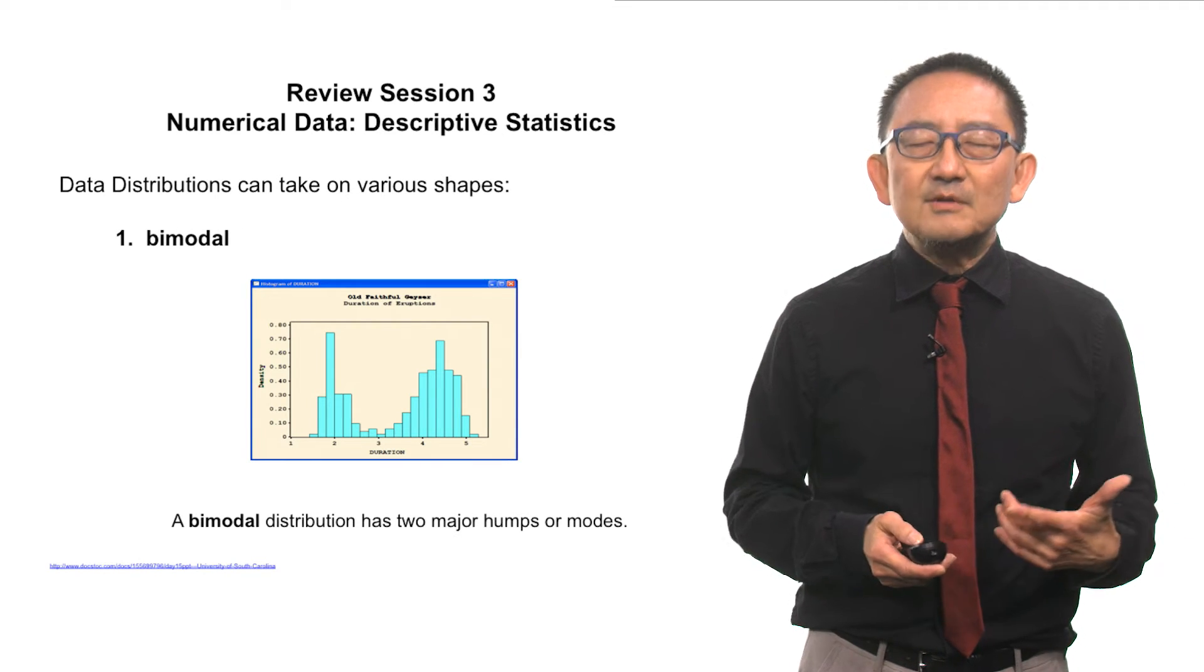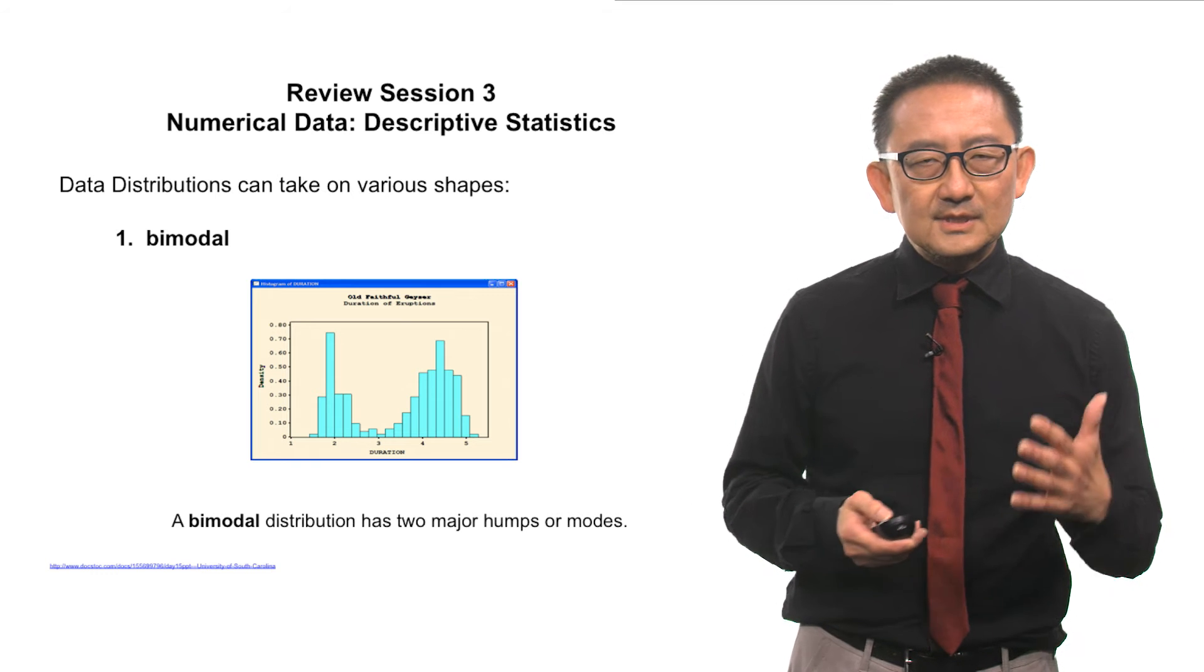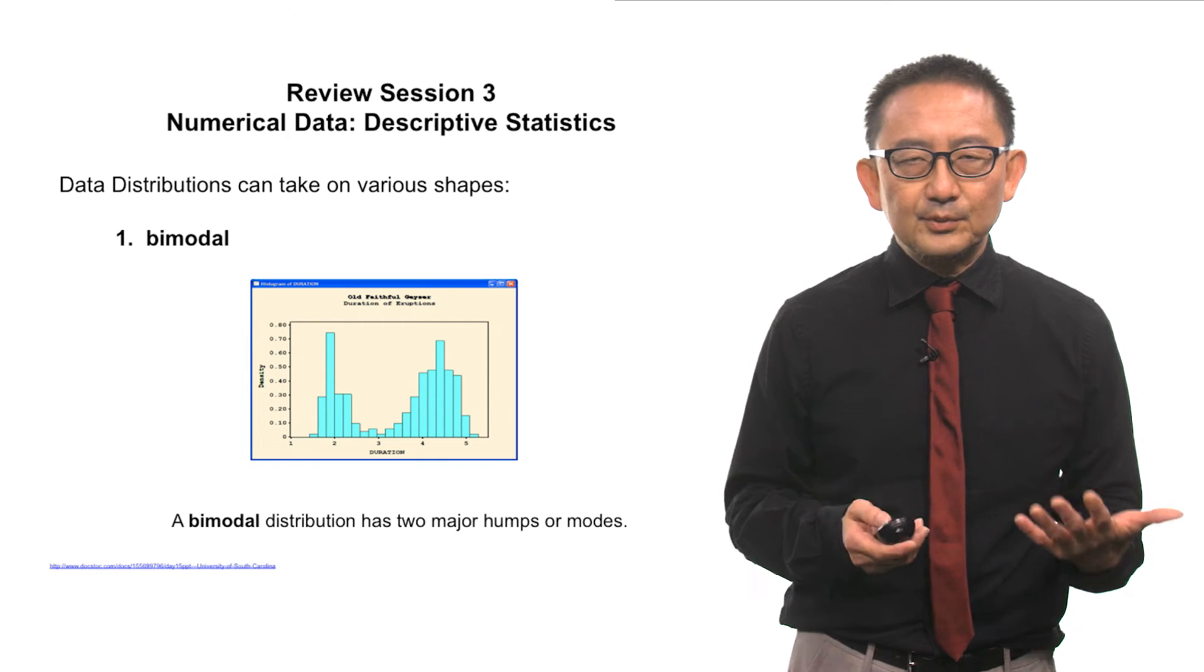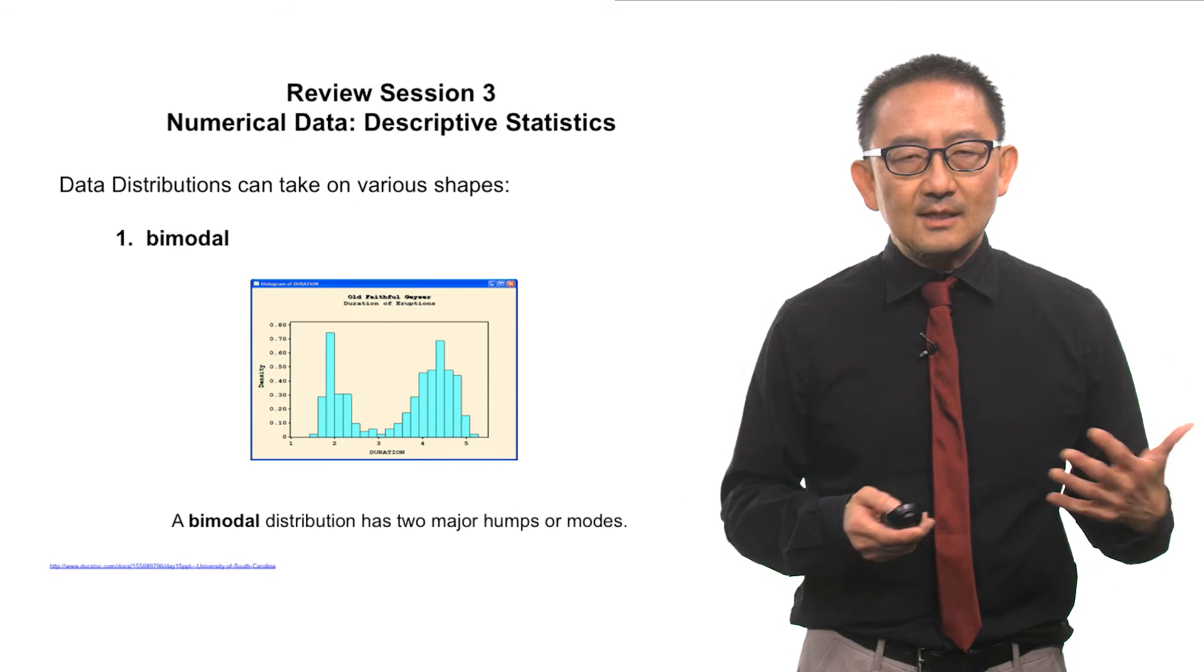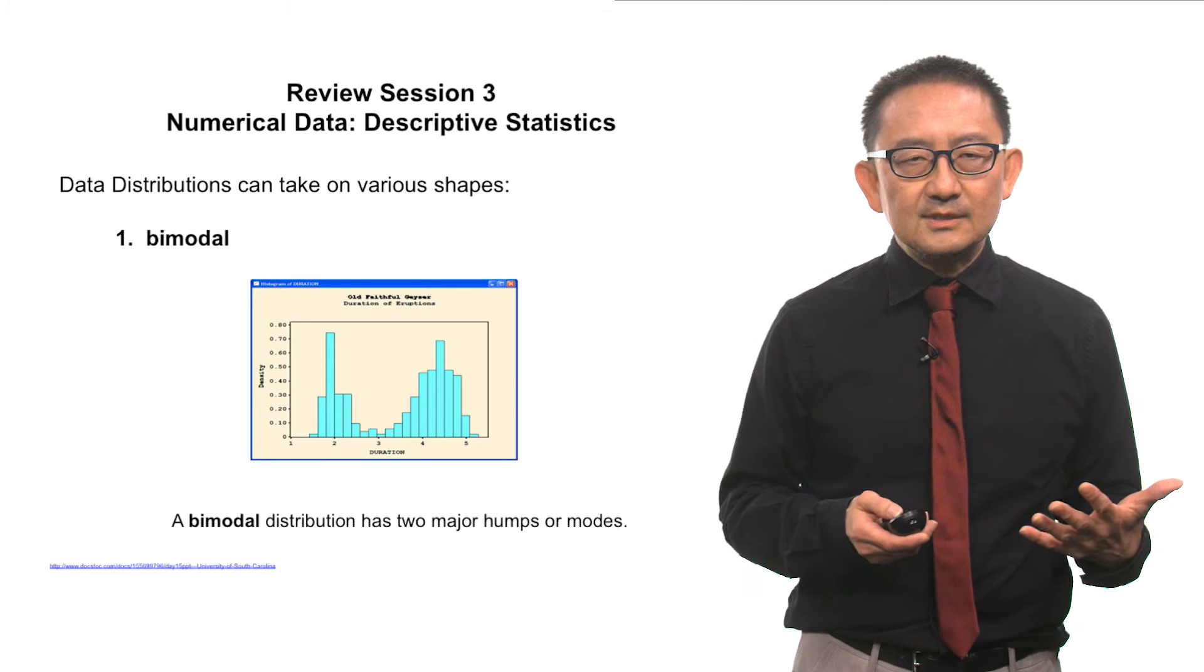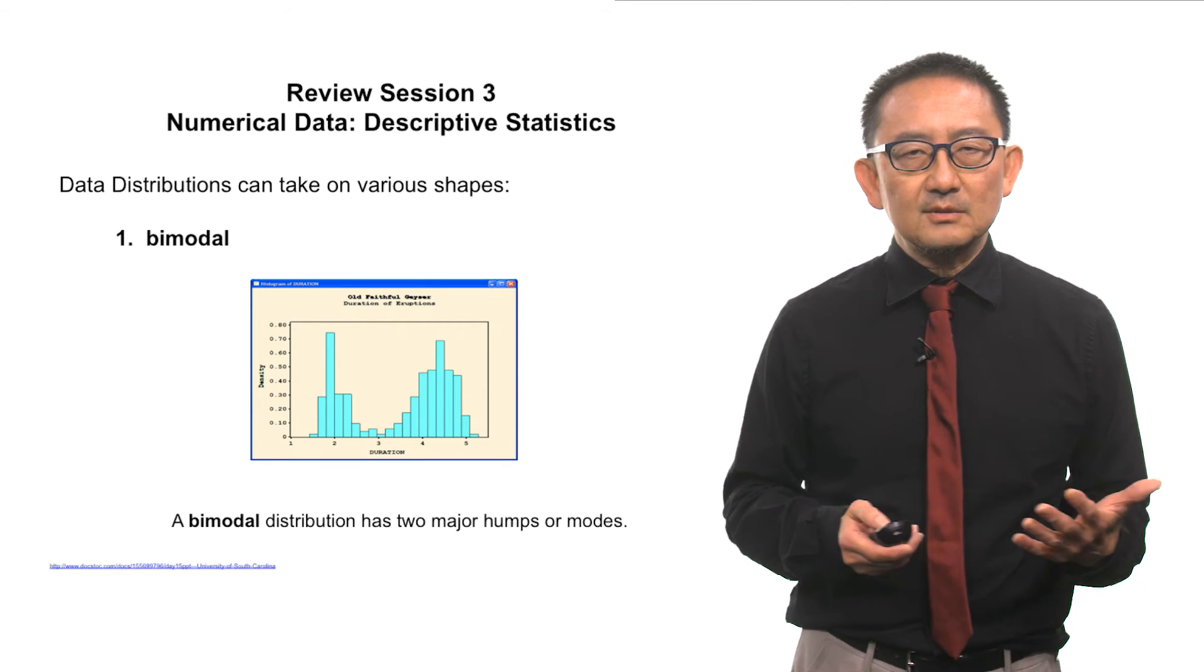Here's an example of a bimodal distribution. You'll notice that there are two peaks, pretty obvious peaks, of two different distributions. So we call this bimodal.